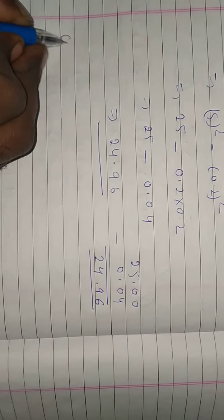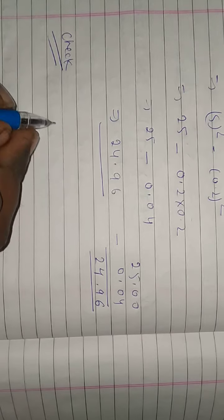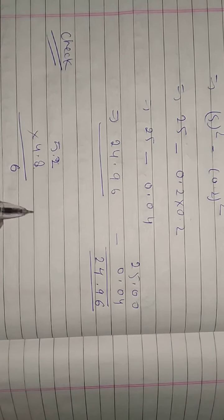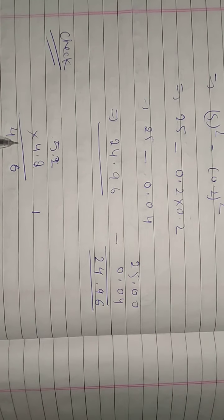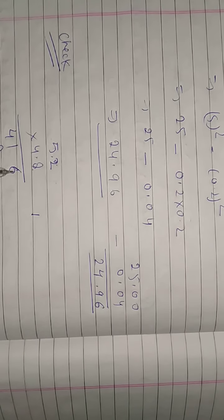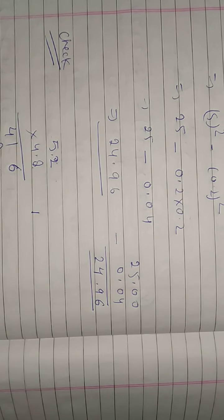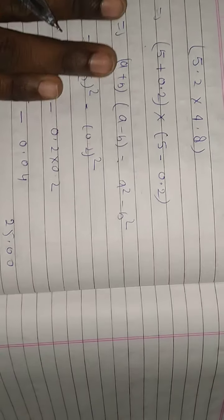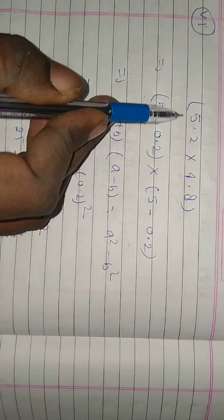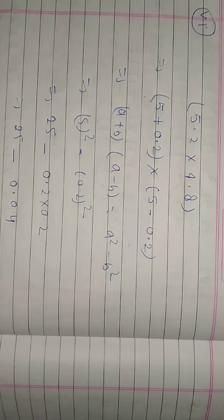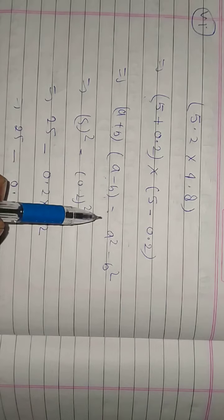You can check this by direct multiplication. Directly multiply 5.2 by 4.8. We can write 5.2 as 5 plus 0.2 and 4.8 as 5 minus 0.2, because this way the formula a plus b times a minus b applies, giving a square minus b square. Here a is 5 and b is 0.2, so 5 square is 25 and 0.2 square is 0.04, which means 25 minus 0.04 equals 24.96.